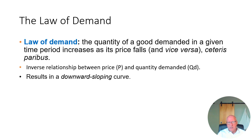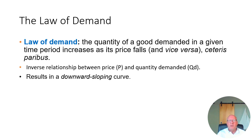Given the law of demand, the quantity of a good demanded in a given time period increases as its price falls, and vice versa. People prefer lower-priced goods to higher-priced goods because in a world of scarcity you can't have everything you want, but if the price on something goes down you can have more of it. If the price goes up, given a limited budget and scarce resources, the amount you want to buy goes down. This is referred to as an inverse relationship between price and quantity demanded — they move in opposite directions.